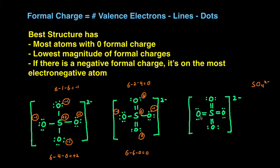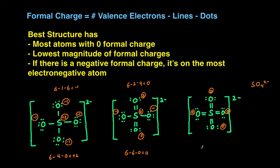And then for the last structure, we already know that the oxygens of the double bonds all have zero formal charge. And then sulfur has six valence electrons minus the number of lines around it, which is eight, and then it has no dots, so that gives us a formal charge of negative two.